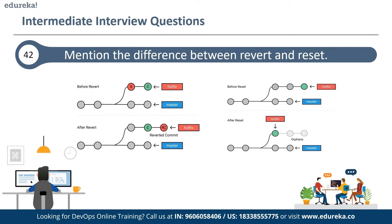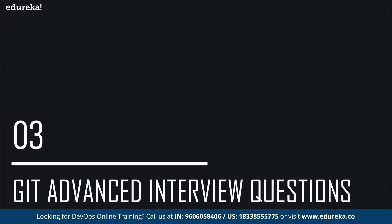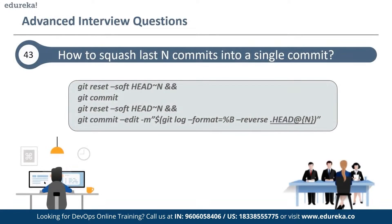Now we will talk about the advanced level of interview questions. The question here is: how do you squash the last N commits into a single commit? There are two options to squash commits into a single commit, and you should mention both options while answering such questions.